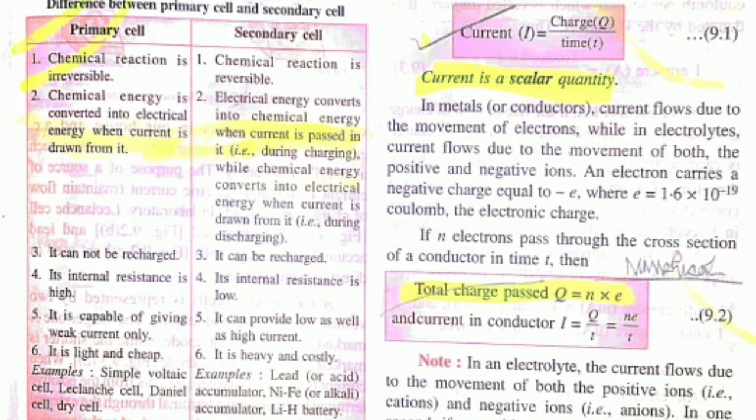The commonly used cells are basically primary cells, like in TV remote the small cell - that is a primary cell. Thus primary cells are light and cheap, whereas secondary cells are heavy and costly. One more difference: TV remote type cells can't be recharged, you have to replace them.